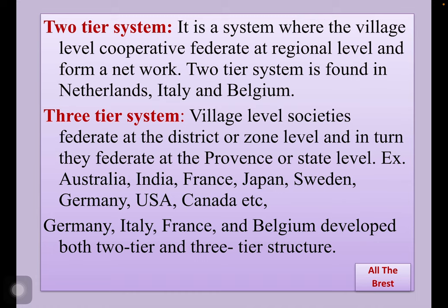In the three-tier system, village-level or local societies federate at a district or regional level, and in turn federate at the province or state level. Countries such as Australia, India, France, Japan, Sweden, Germany, USA, Canada, and others have adopted the three-tier cooperative system. Germany, Italy, France, and Belgium also developed both two-tier and three-tier structures, as did India, for their convenience.